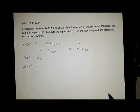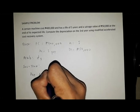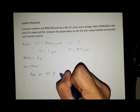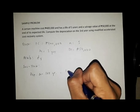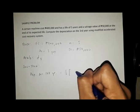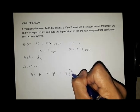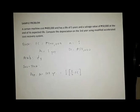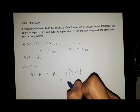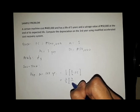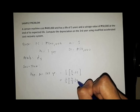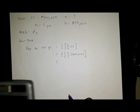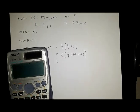First, we have to solve for the depreciation for the first year. We use the formula: one-half times two over n times FC. So we have one-half times two-fifths times 400,000 pesos.